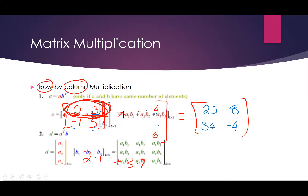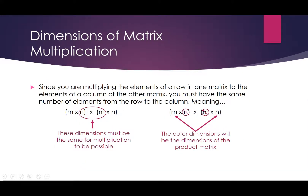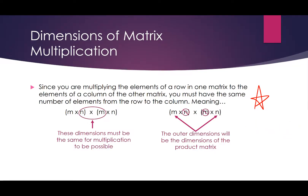It's important that our dimensions line up properly so that we have the same number of elements in the row as in the column, so that we can actually multiply them together. We can't do a 2 by 2 matrix times a 3 by 2 matrix because it simply didn't add up — we didn't have enough numbers to put together.